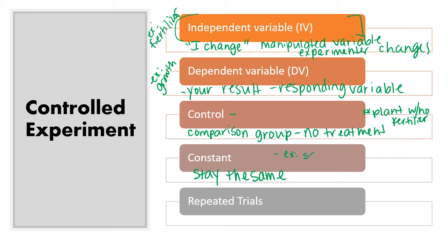So you would use, for example, the same type of plant, the same size pot. You would feed them the same amount of water. They would get the same amount of sunlight. The list could go on and on and probably should so that you know that that plant only grew taller because it had that fertilizer.